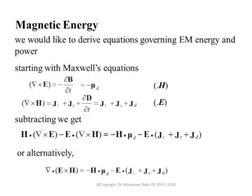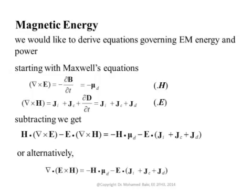What we will do is take the dot product of the first equation with vector H, and the dot product of the second equation with vector E, and then subtract them. When you do that, you get H·(curl E) minus E·(curl H) equals minus H·μD — the magnetic displacement current density — minus E dot all the electric currents: the impressed electric currents coming from sources, the conduction current σE, and the displacement current ∂D/∂T.